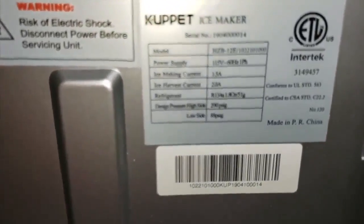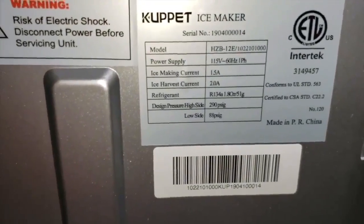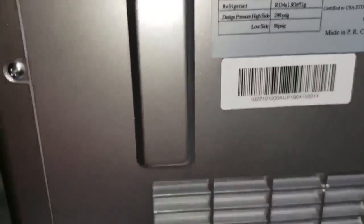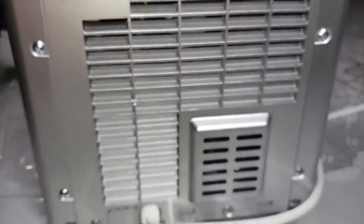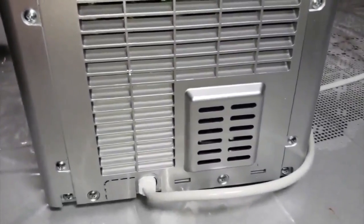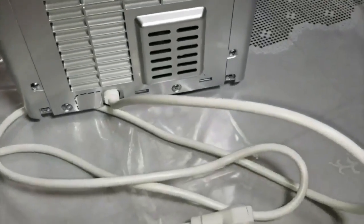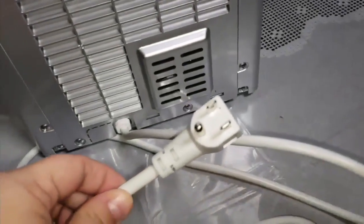Let's just make our way to the back side. Right here is the model number, the power supply, the ice making capacity, the ice harvest, and the refrigerant. And then down here you can see the vents, and you've got the power cord. As you can see, this is a standard 110 power cord.